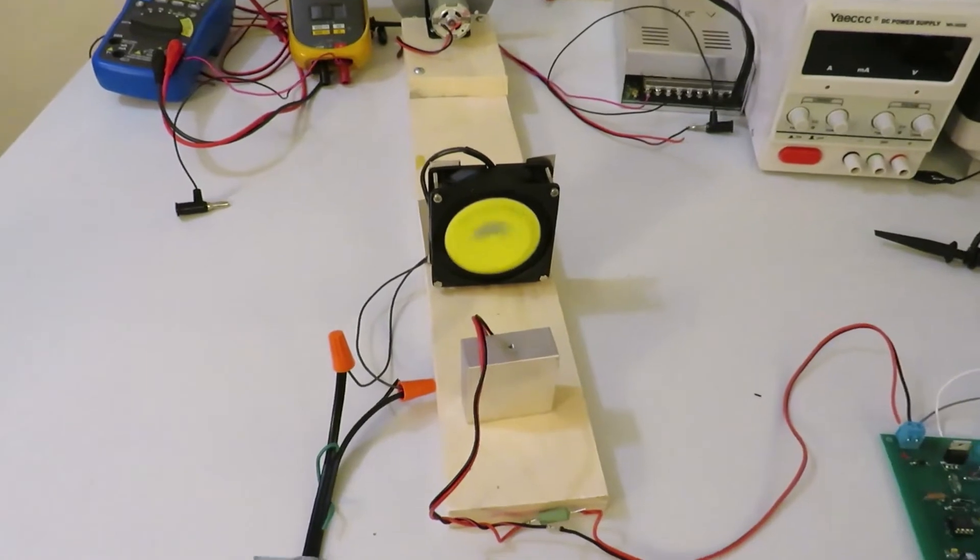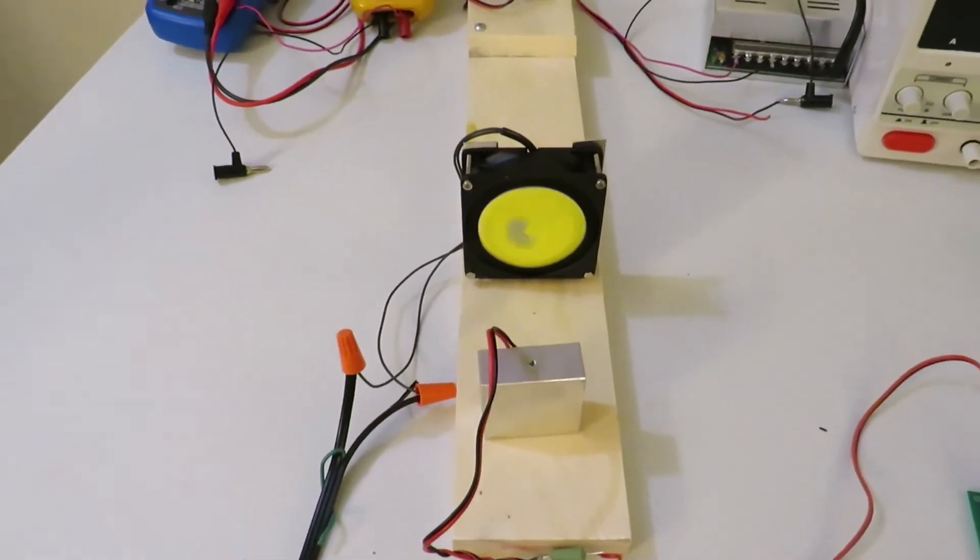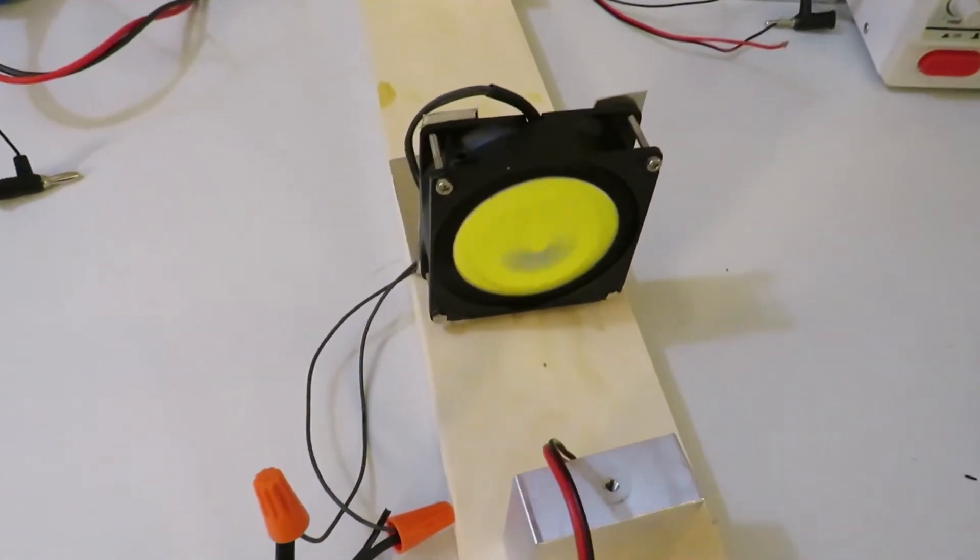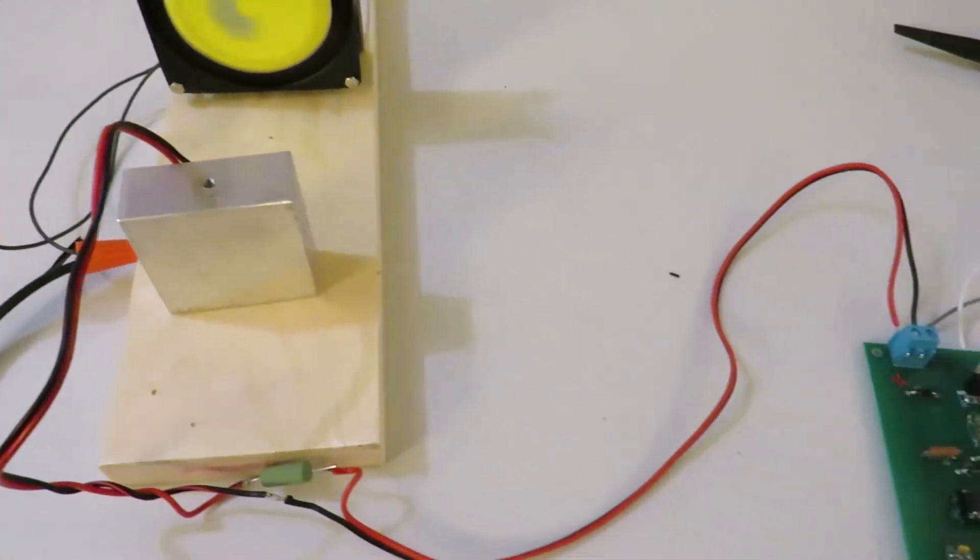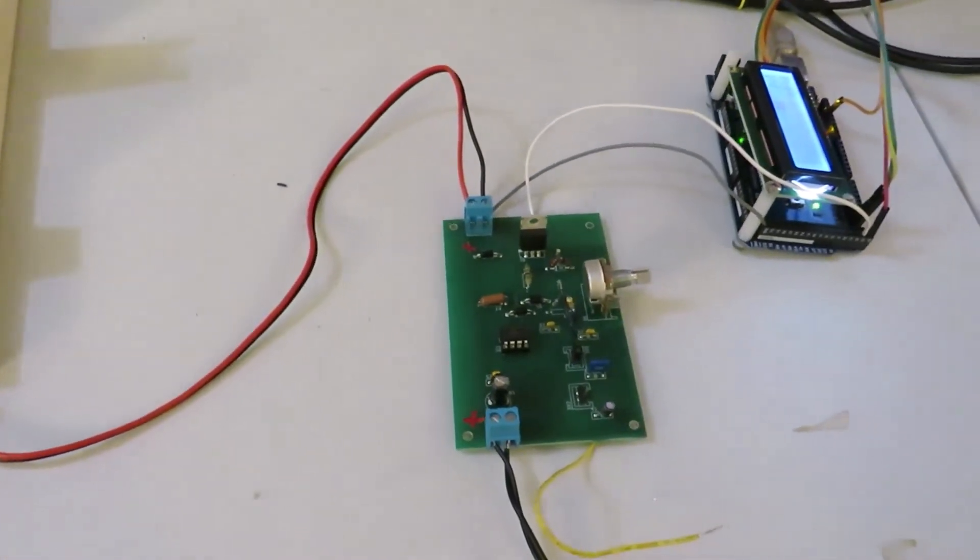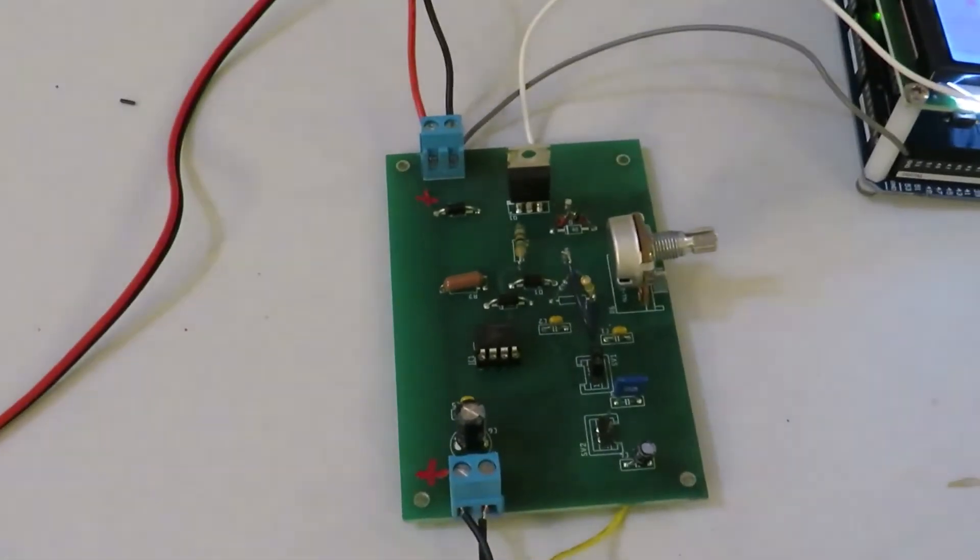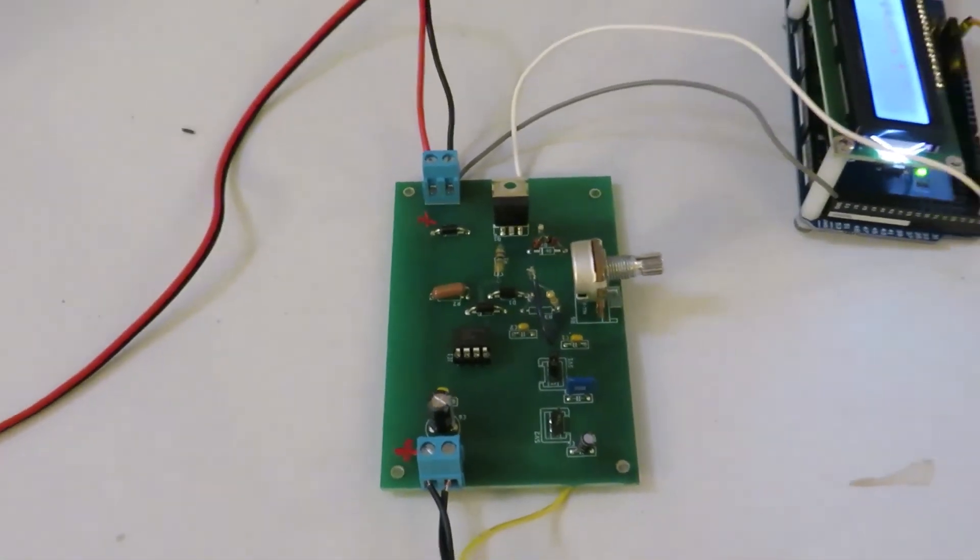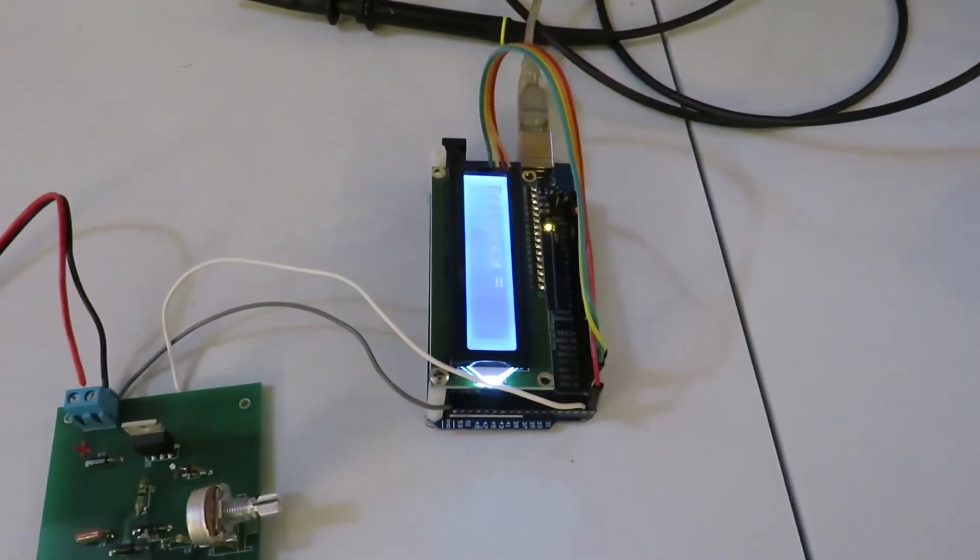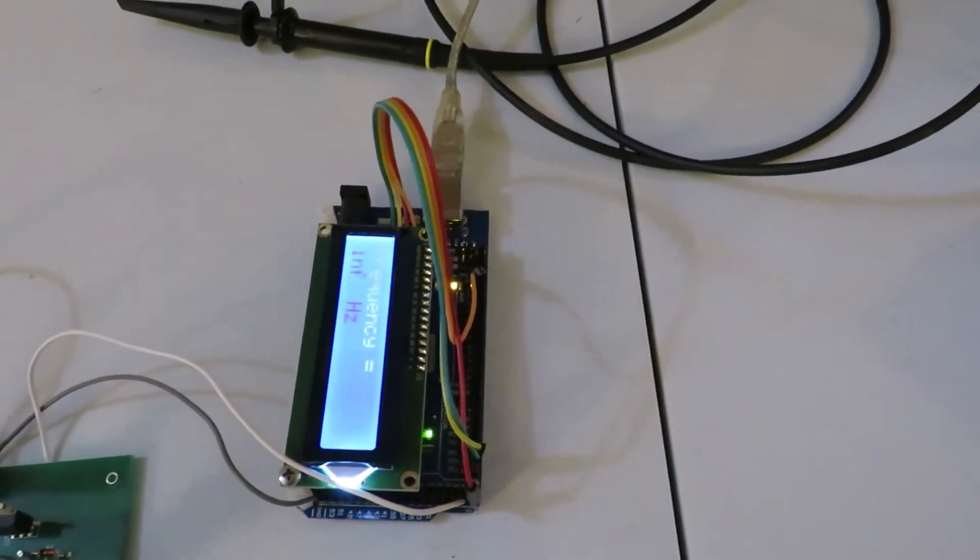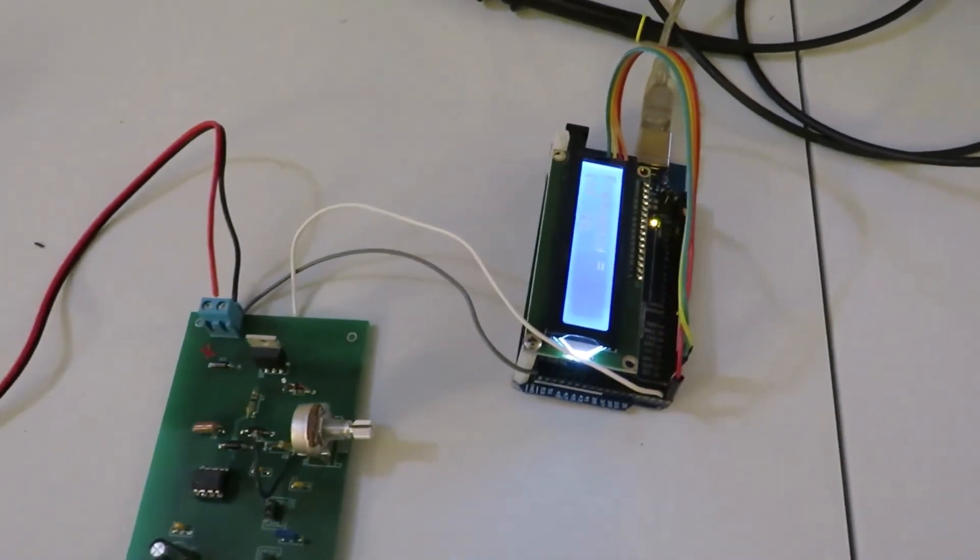The strobe light test setup is shown here. A rotating disk. A white LED. And this is the pulse generator, the LED driver. And here is the Arduino-based frequency counter.